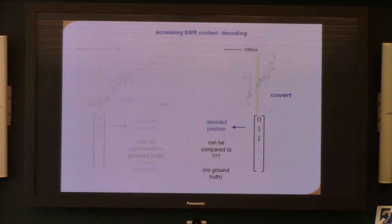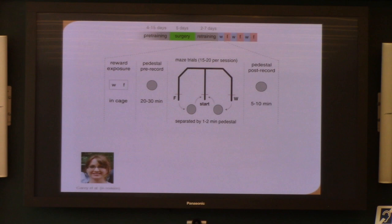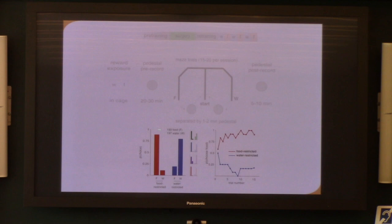So one experiment that we've run somewhat recently, although the data analysis is taking quite some time, is we wanted to ask, what happens when you change the motivational state of the animal? When the animal is hungry versus thirsty, there's a clear difference in what the animal is interested in behaviorally. If we have a maze where you have food here and water here, and you change the animal's motivational state, well, if they're food restricted, they're going to be interested in going towards the food. If they're water restricted, they're going to be interested in going towards the water. And if you believe that replay is about memory of recent experience, or if you believe that replay is about planning a trajectory towards a goal, in this situation, you would predict that the animals that are hungry make replays towards the food, either because they've been there recently or they're about to go there. And conversely, for the water, a thirsty animal will do replays towards the water.